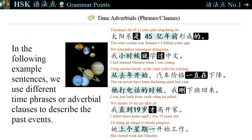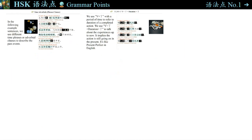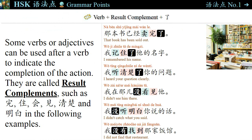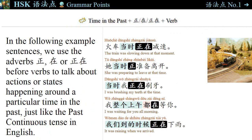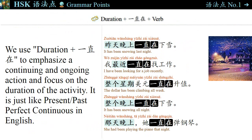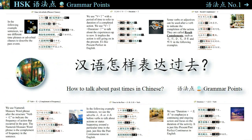Now we have learned 18 grammar points and 90 example sentences. Verbs are not inflected in Chinese. With respect to this point, Chinese grammar is simpler than English grammar. However, the usages of Chinese adverbs, modal verbs, and particles are complicated. To learn and master them, hard work is necessary. If you like this video, please comment, share, like, or subscribe. 感谢你收看我的视频。我们下次再见。